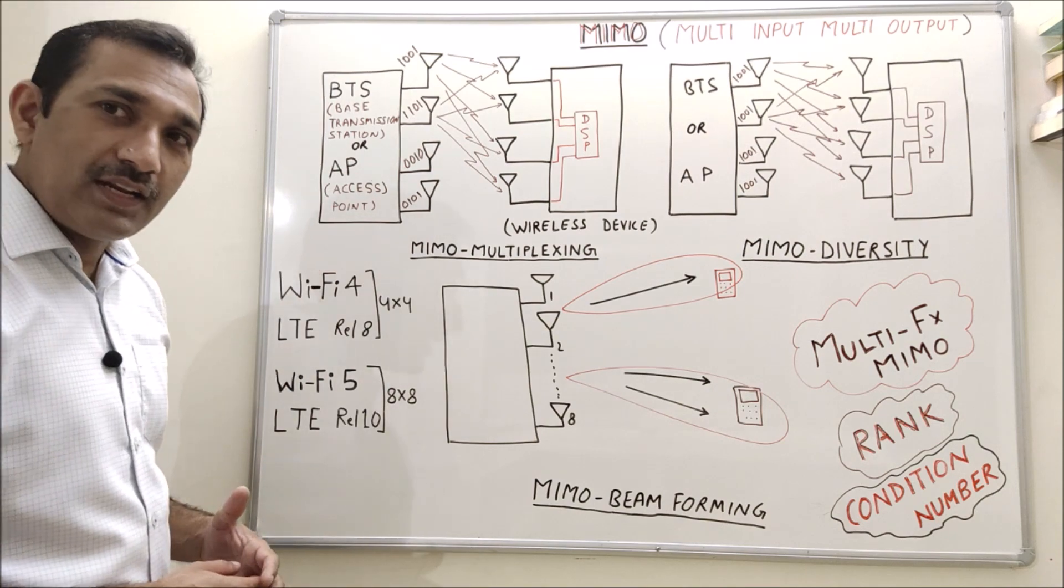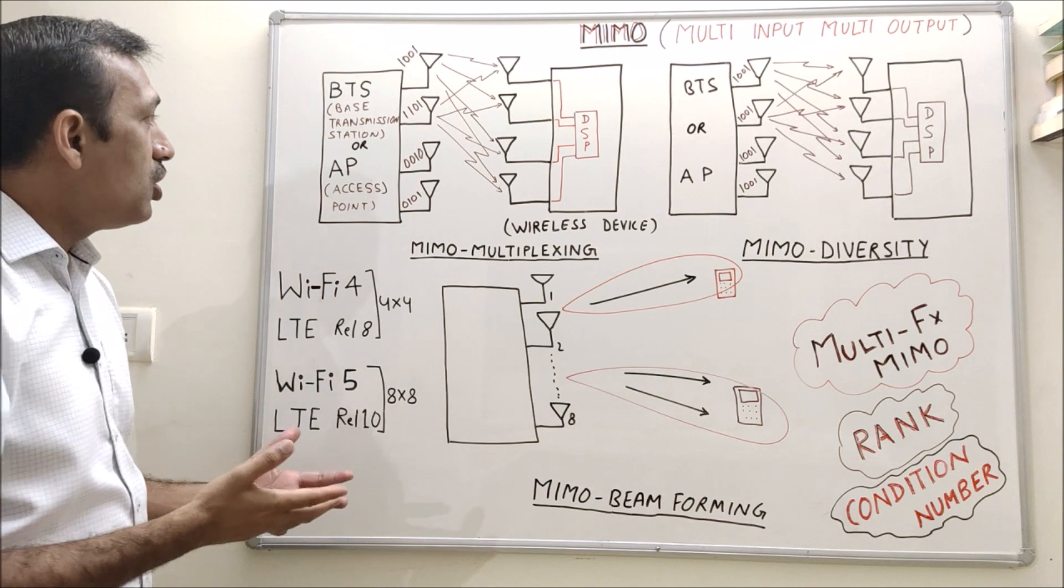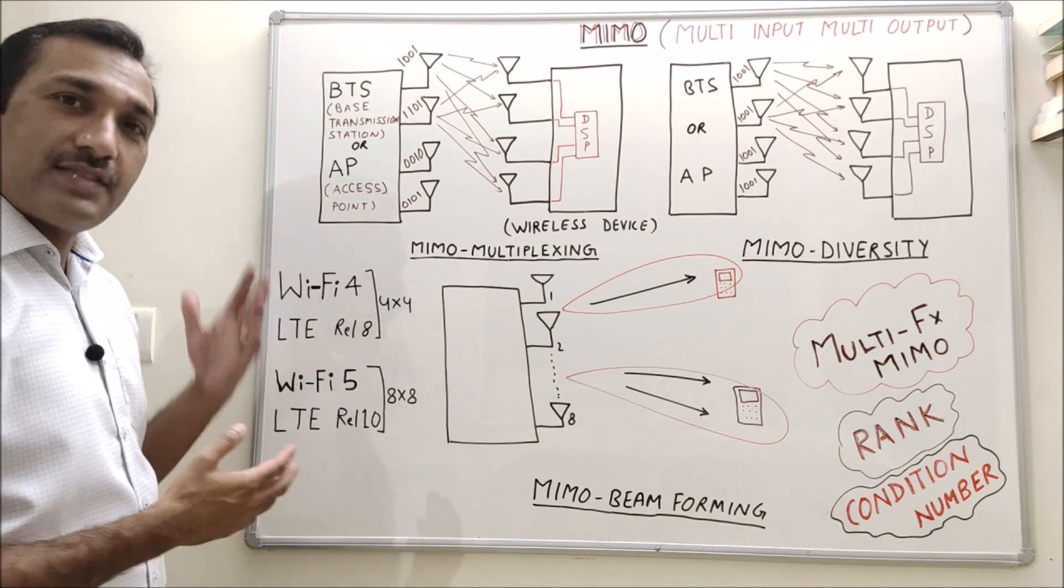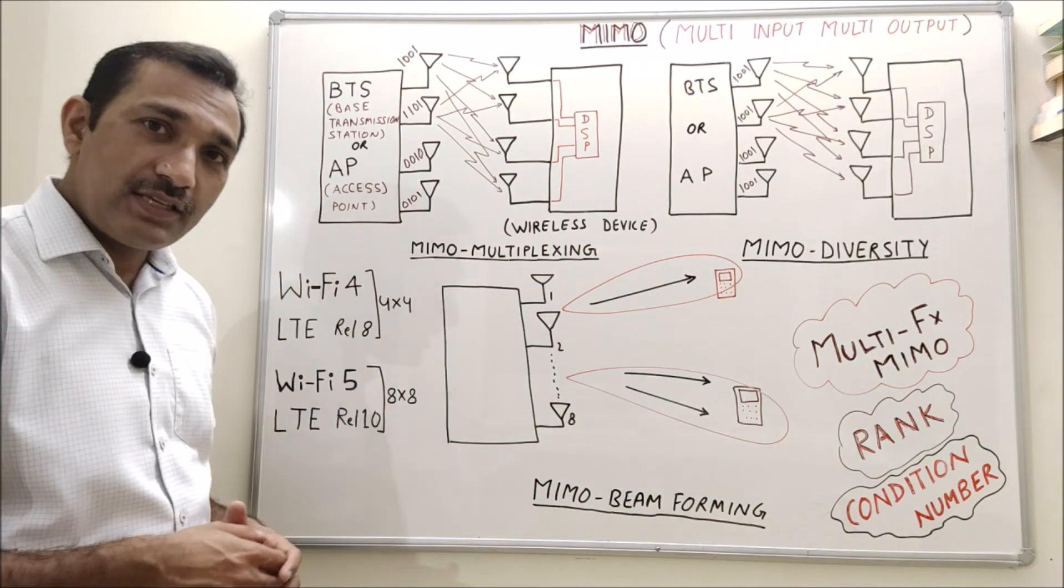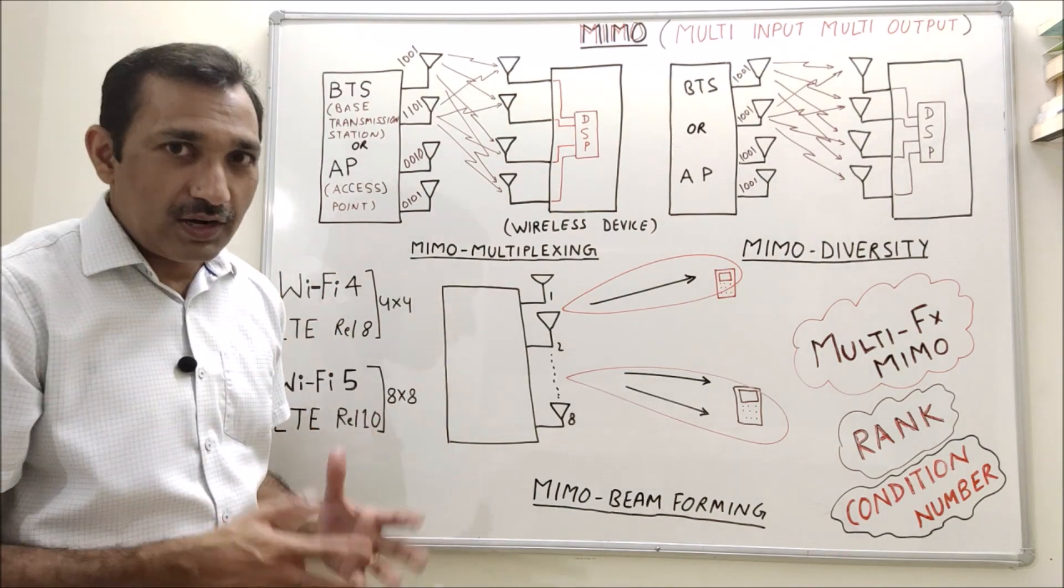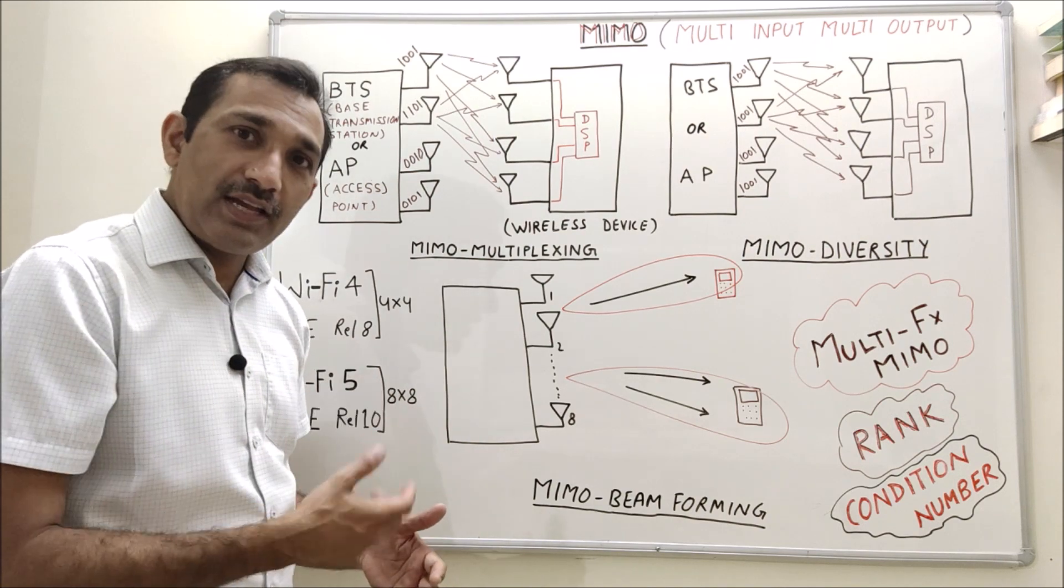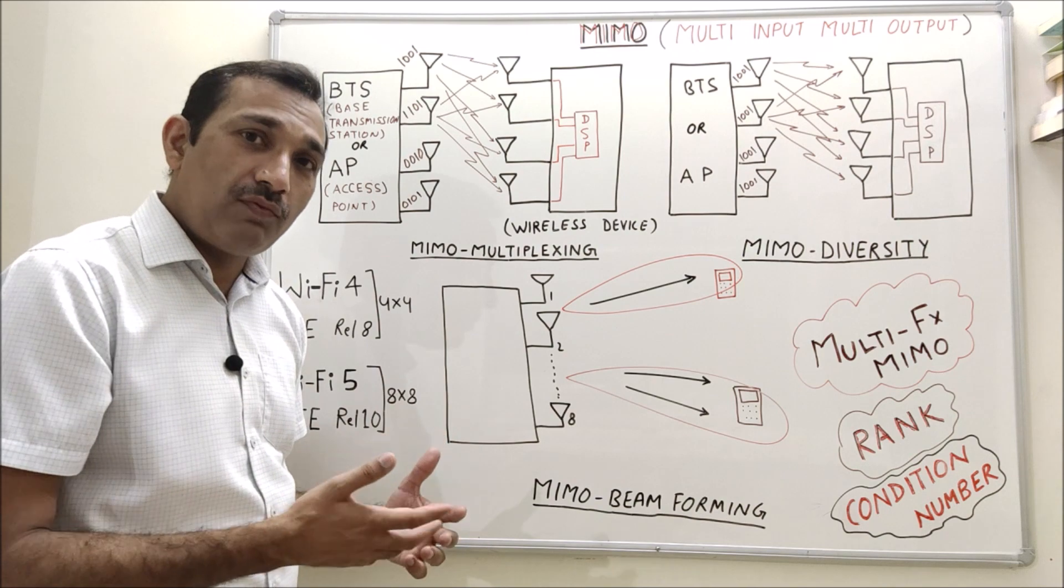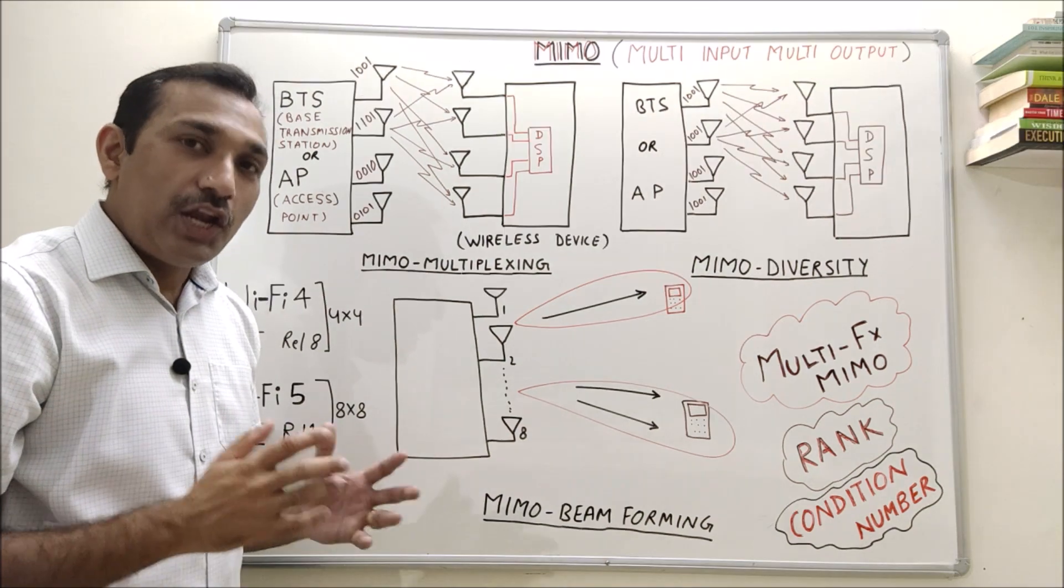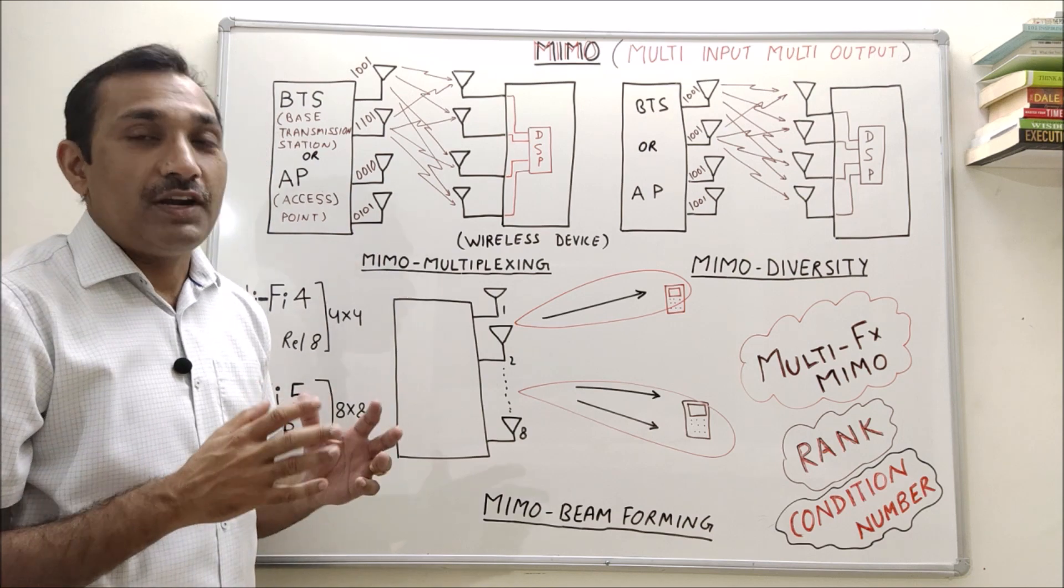These transmitting antennas can be on BTS which is base transmission station or AP access point. Access point is used in Wi-Fi technology and BTS or base station is in cellular technology. While these receive antennas can be on a handset or any receive device like laptop, mobile phones or any other device. Now, how to use it?